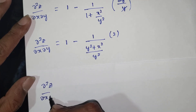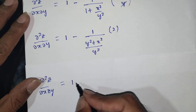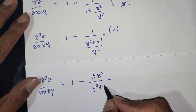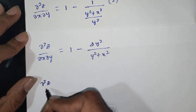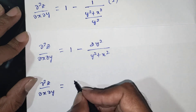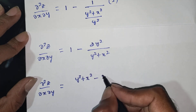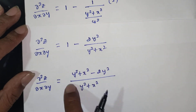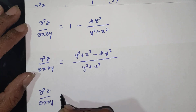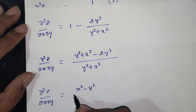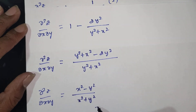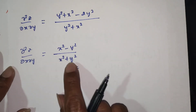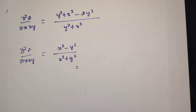So dou square z by dou x dou y is equal to: taking LCM of y square plus x square, we get y square plus x square minus 2y square, all divided by y square plus x square. Cancelling and simplifying, dou square z by dou x dou y is equal to x square minus y square divided by y square plus x square, which equals x square minus y square over x square plus y square. This is the final answer. We have proved that dou square z by dou x dou y is equal to x square minus y square over x square plus y square. Thank you, please like, share and subscribe.